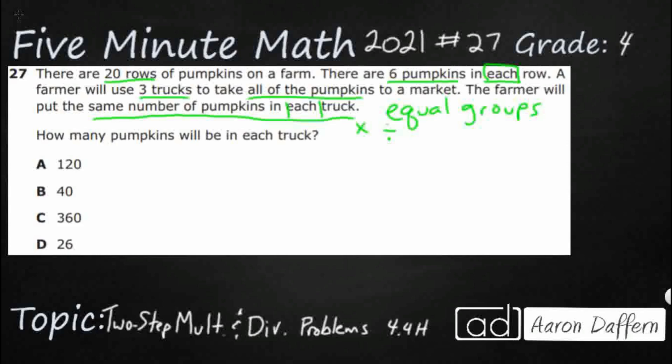Let's start with this. We've got 20 rows of pumpkins in a farm and there are 6 pumpkins in each row. So if each row has the same number, that means we're dealing with equal groups. So let's draw a strip diagram to kind of represent that.